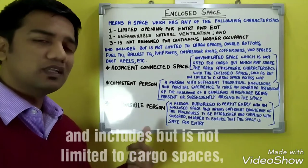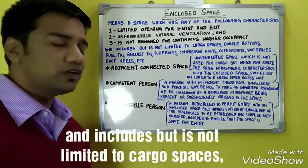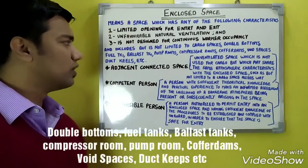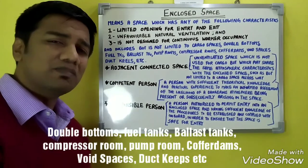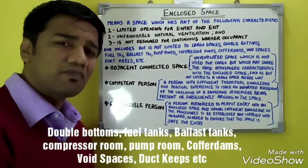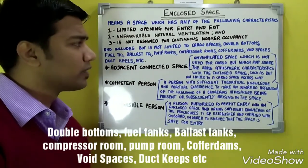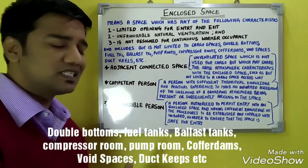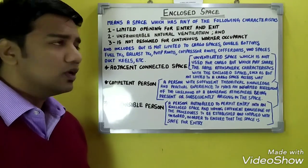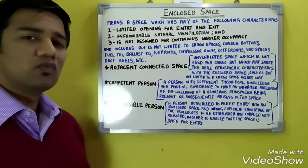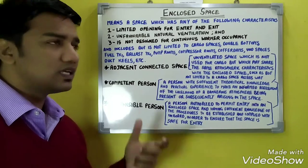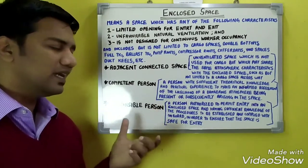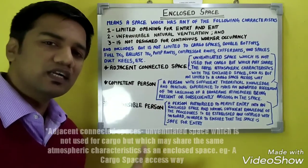Enclosed spaces may include but the list is not limited to: cargo spaces, double bottoms, fuel tanks, ballast tanks, compressor rooms, pump rooms, cofferdams, void spaces, duct keels, etc. These are what enclosed spaces are and this is the definition for enclosed space.